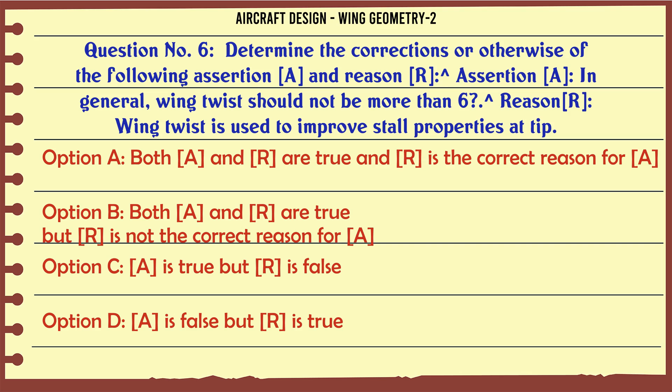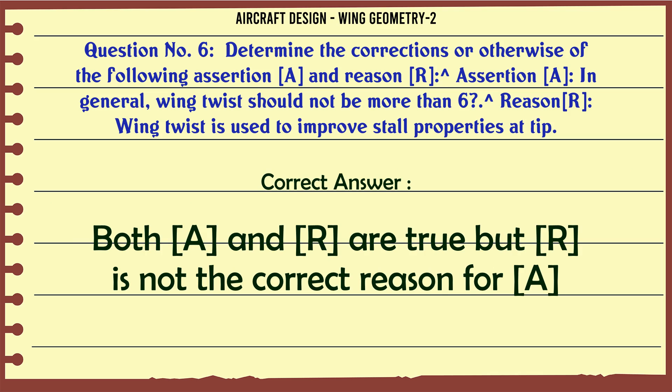A: Both A and R are true and R is the correct reason for A. B: Both A and R are true but R is not the correct reason for A. C: A is true but R is false. D: A is false but R is true. The correct answer is A.